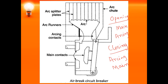When the fault occurs, the main contacts get separated and an arc is formed. Due to electromagnetic forces and thermal action, the arc moves upwards. The arc is formed across the arcing contacts and slowly moves upward along the arc runners. Finally, it reaches the arc splitter plates where it gets split. When it reaches the plates and gets split, the resistance increases and the arc is quenched. This is how the air break circuit breaker works.